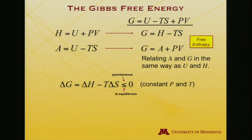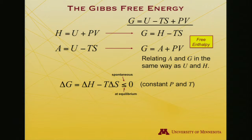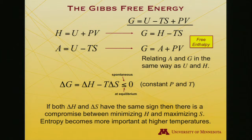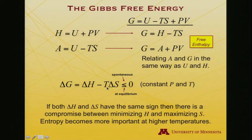Expressing this as a full change rather than a differential, for a spontaneous process at constant P and T: ΔG equals ΔH minus TΔS, where the equality holds at equilibrium and the inequality holds for spontaneous processes. Just as for the Helmholtz free energy, there can be a competition between entropy changes and enthalpy changes in determining the sign of ΔG, and at higher temperatures entropy begins to dominate as it's multiplied by a larger temperature factor.